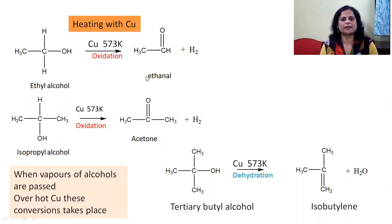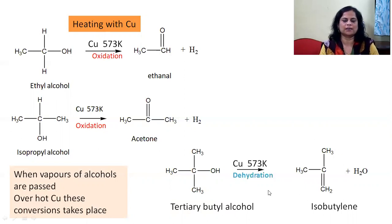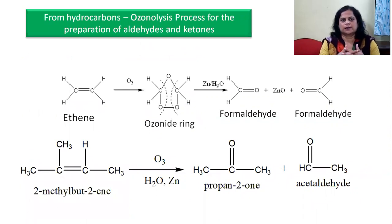For example, from ethanol, removal of H2 takes place to give ethanal. For secondary alcohol, isopropyl alcohol, when heated in a copper container at 573 Kelvin, oxidation takes place and it forms acetone by removal of H2 — a dehydrogenation reaction. For tertiary alcohol, it does not form a carbonyl compound; instead it forms isobutylene alkene by dehydration reaction — removal of H2O.